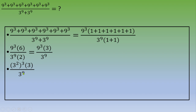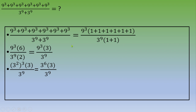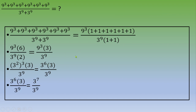Thanks to the formula a to the power m, to the power n, equals a to the power m times n, we can write 3 to the power 6, times 3, over 3 to the power 9. Now we apply the rule that when multiplying two numbers with the same base, we add the powers: 6 plus 1 equals 7.